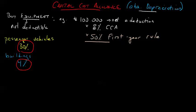So with this piece of equipment, we take $100,000 times 8%, that would be $8,000 times 50%. In the first year you would have a $4,000 deduction available, or $4,000 of CCA.